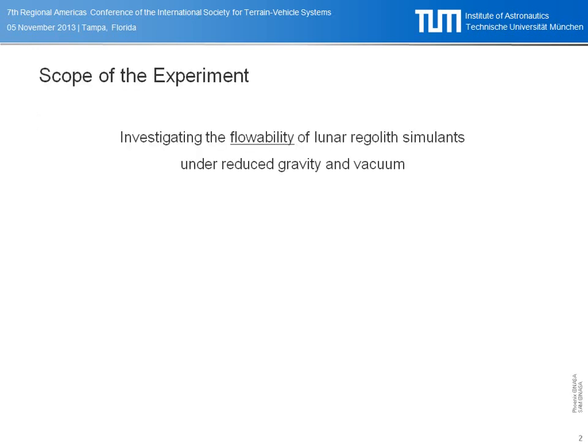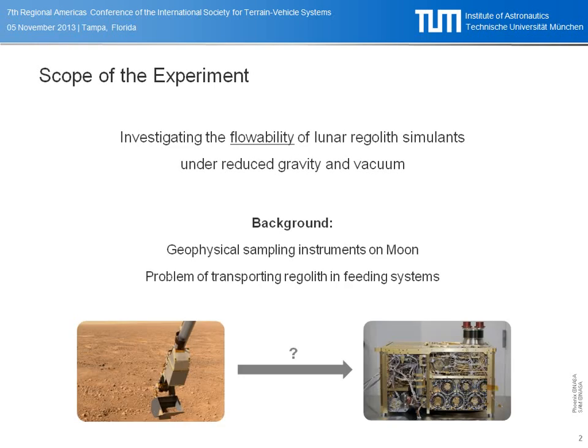The scope was to investigate the flowability. The background for these experiments is that wherever you have sampling instruments on rovers or landers on Mars, the Moon, or asteroids, there's a problem of how to transfer the sample from the collection instrument — which is a shovel, a drill, or whatever — to an analysis device. In most cases this happens via guiding systems such as hoppers, so that's why we looked into feed hoppers in particular.